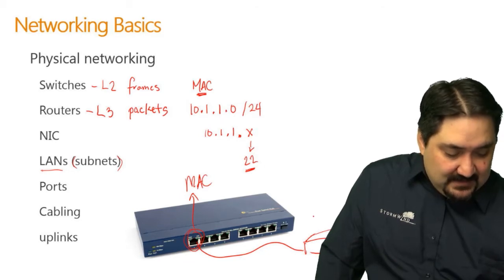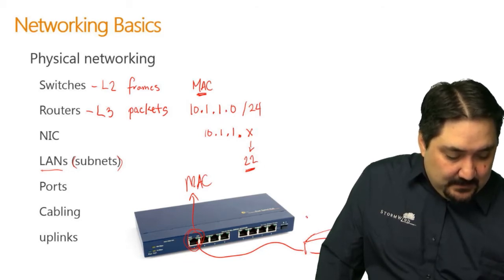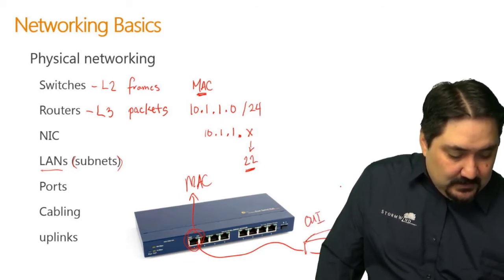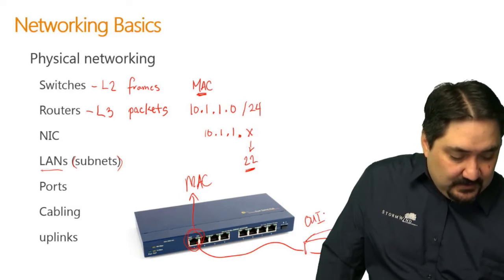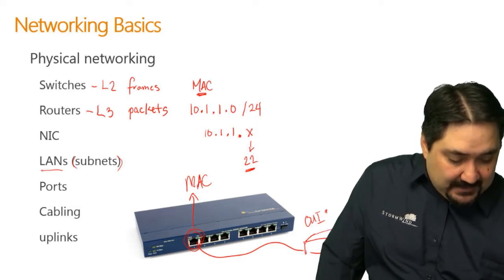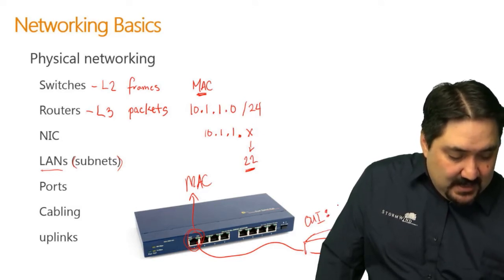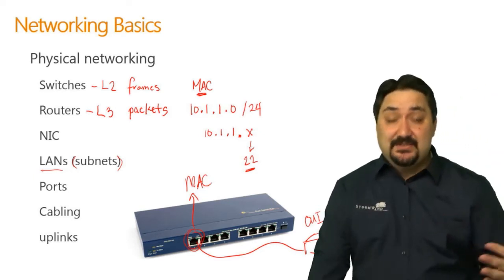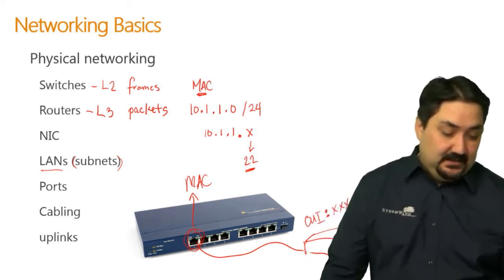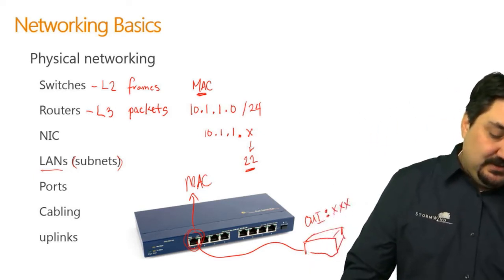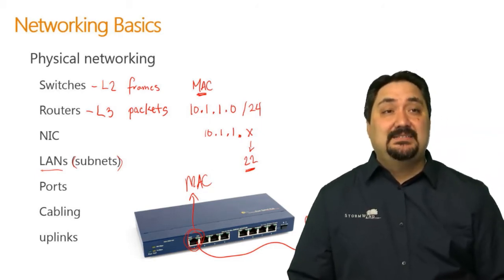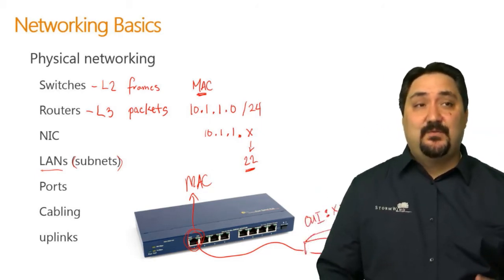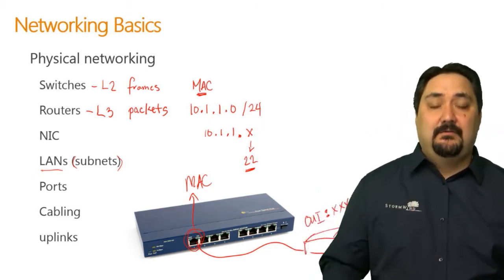A MAC address is made up of an OUI — Organizational Unique Identifier — which is part of the MAC address, and then a sequentially assigned number after that. That is your MAC address, and that's how switches forward frames.